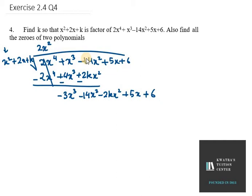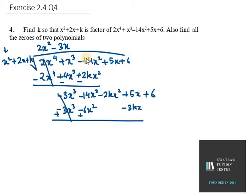We have x² in the divisor and minus 3x³ in the current dividend, so we multiply by minus 3x. That gives minus 3x³, then the second term minus 6x², and the last term minus 3kx, which is placed below 5x because they share the same variable. Now subtracting: minus 14 plus 6 gives minus 8x², and minus 2kx² remains.